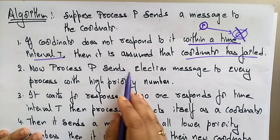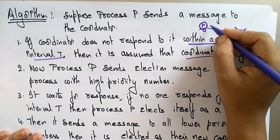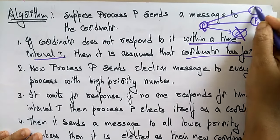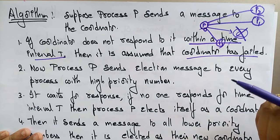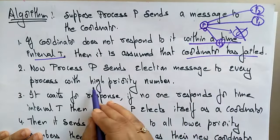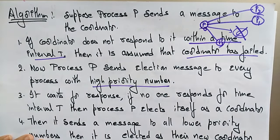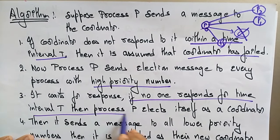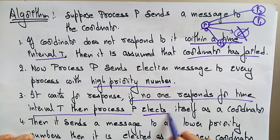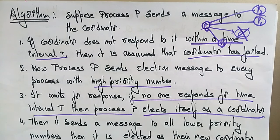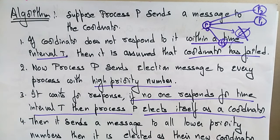Next, process P sends an election message to every process with a higher priority number. Since P has recognized that the coordinator failed, it initiates the election by messaging all higher-priority processes. P then waits for a response. If no process responds within time T, then P itself is elected as coordinator.